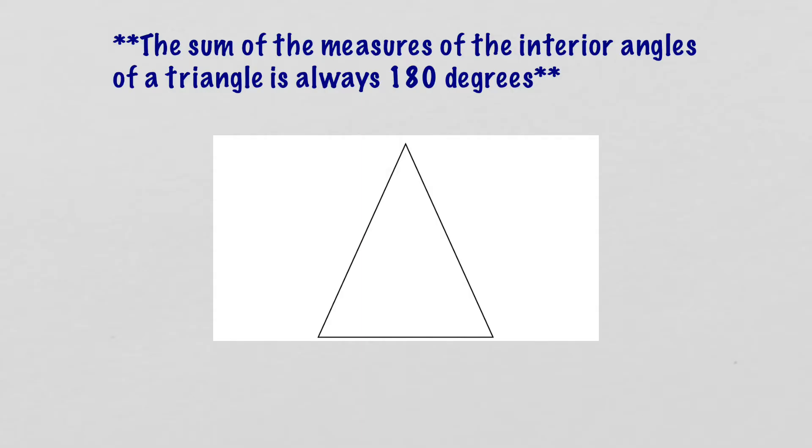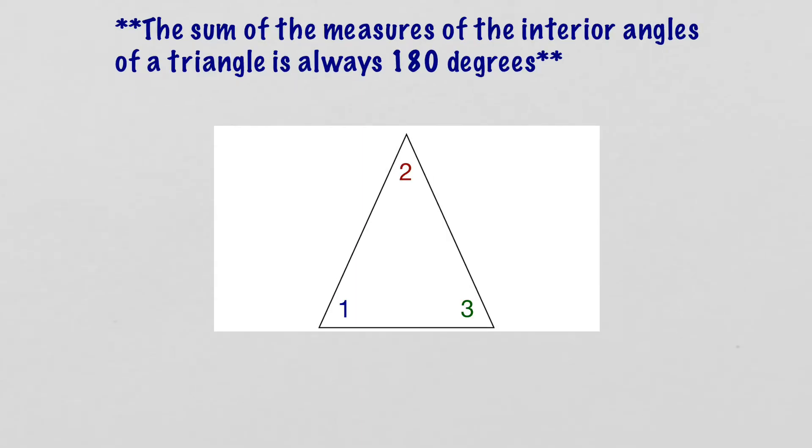Now you could take my word for it, but let's use some information that we know to quickly prove that. So here I have the same triangle, and we've labeled the angles angle one, angle two, and angle three. Now don't worry about what measures they are. We don't care how many degrees they are right now. That's not even necessary to prove this. What I do want you to think about is the parallel lines and transversals that we talked about last week. So what I'm going to do is I'm going to add some parallel lines on the top and the bottom of that triangle. So basically what that ends up doing is it makes these sides of the triangle now transversals because they are crossing parallel lines.